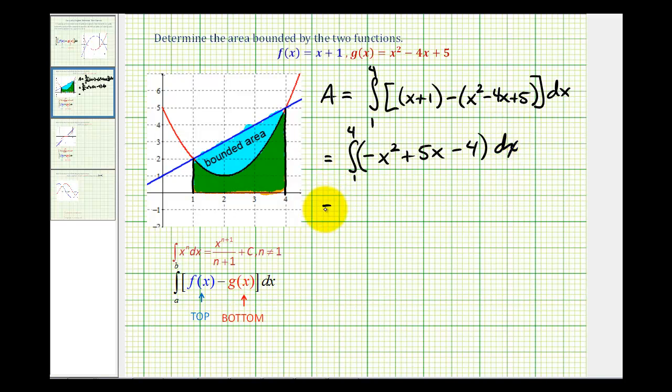Now we'll determine the anti-derivative. So we'll have negative x cubed over 3 plus 5 times x squared over 2, that'll be 5 halves x squared, and then minus 4x.